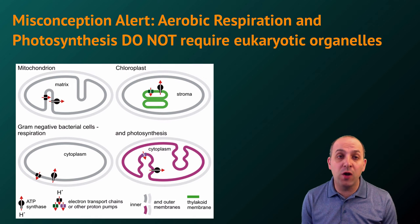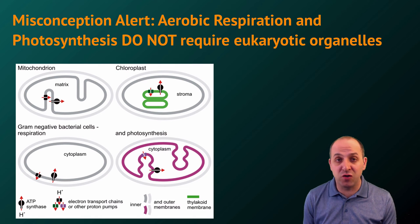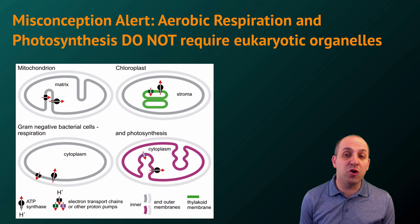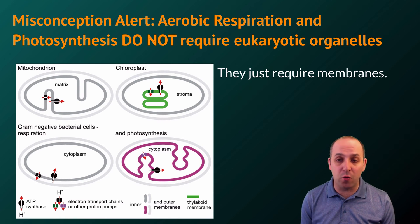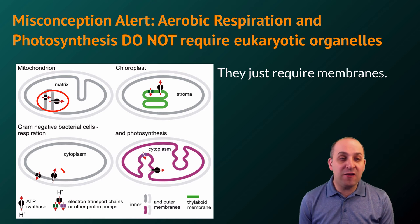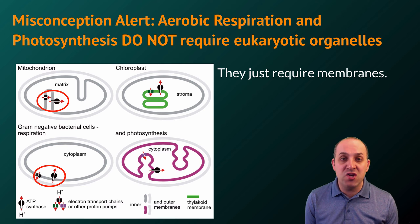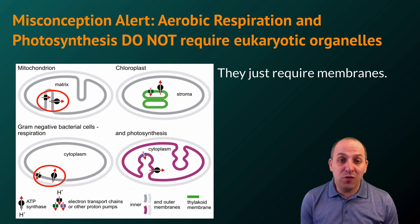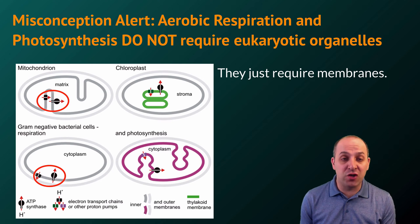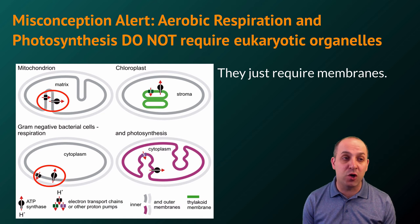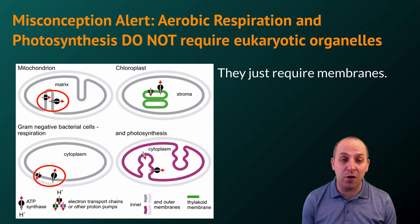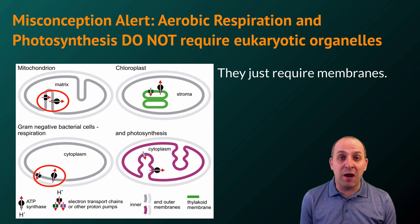Before we move on, let's clear up one quick misconception related to this topic. Aerobic respiration and photosynthesis do not require eukaryotic organelles — they only require membranes. As long as you have membranes where you can separate out regions of the cell and arrange the required proteins, the electron transport chain and ATP synthase, you can carry out aerobic respiration and photosynthesis. These processes evolved originally in prokaryotes before becoming established in eukaryotes.